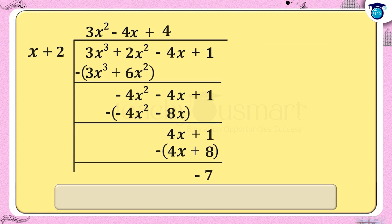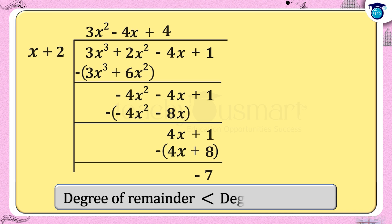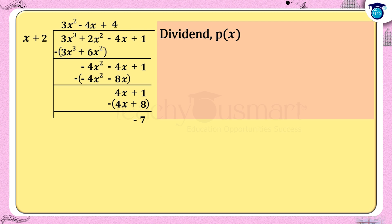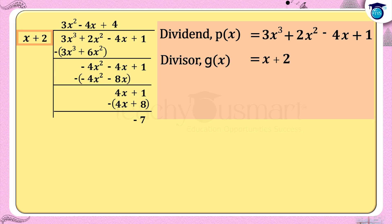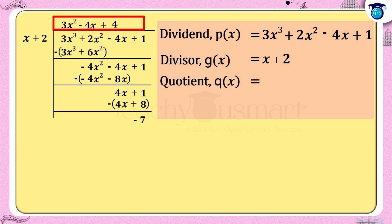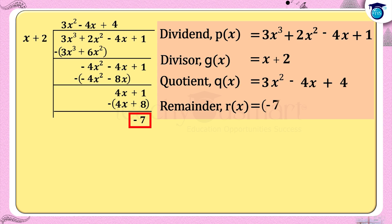Here the degree of the remainder is less than that of the divisor, hence the division terminates. The quotient is the sum of all quotients. Dividend p(x) = 3x³ + 2x² - 4x + 1, divisor g(x) = x + 2, quotient q(x) = 3x² - 4x + 4, and remainder r(x) = -7.